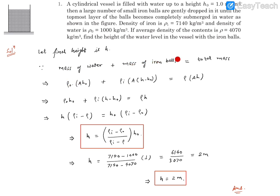How much is the mass of iron balls going to be? The iron ball density is known to us, which is ρᵢ. If we can find out the volume these iron balls are occupying, we can get the mass of the iron balls.